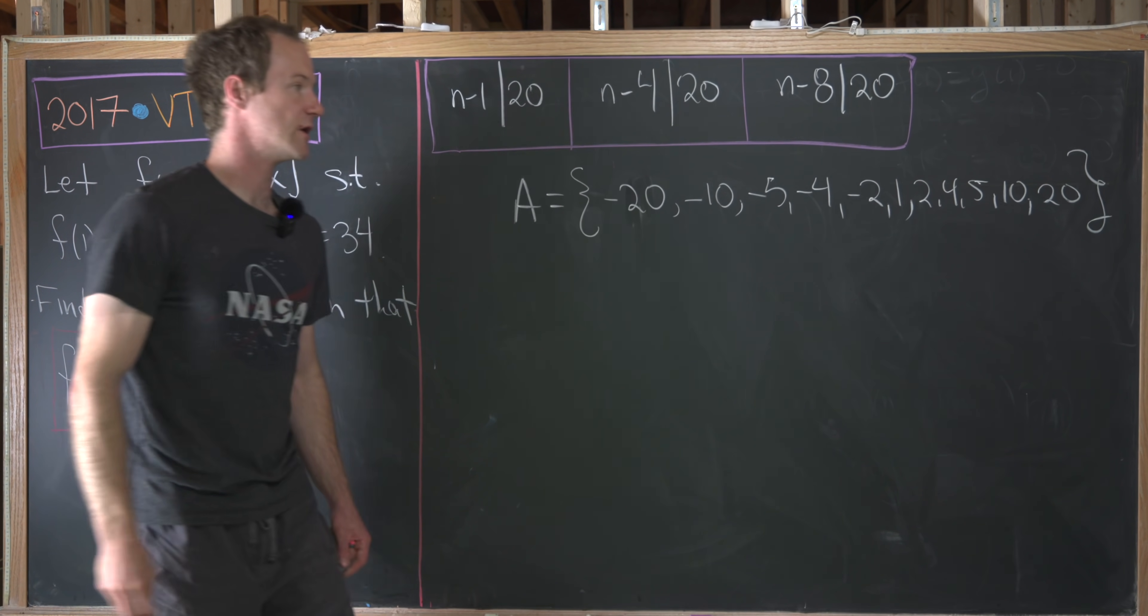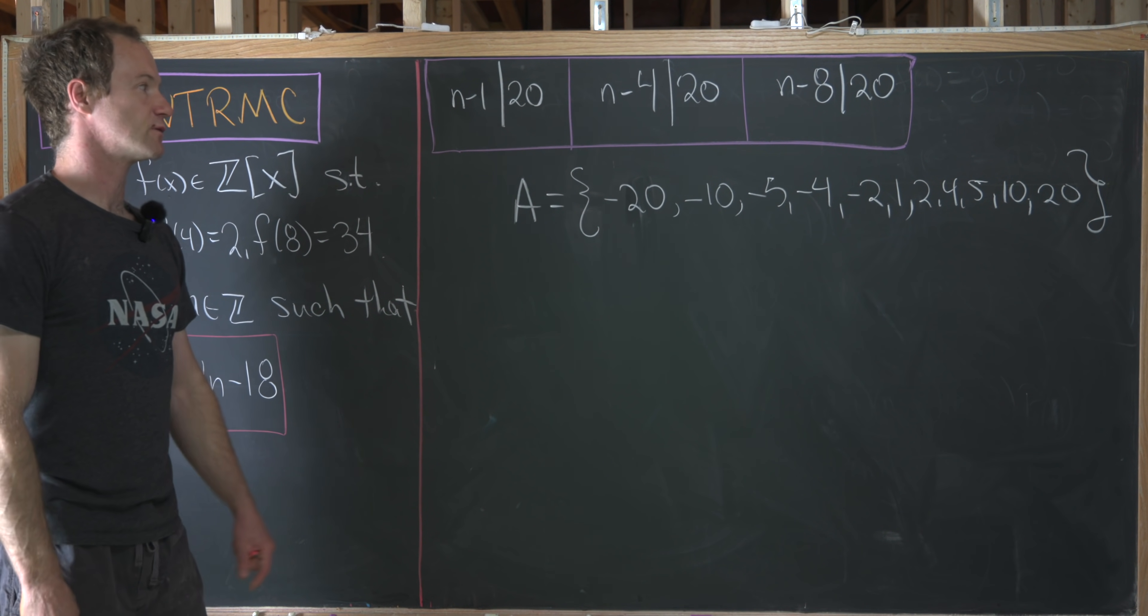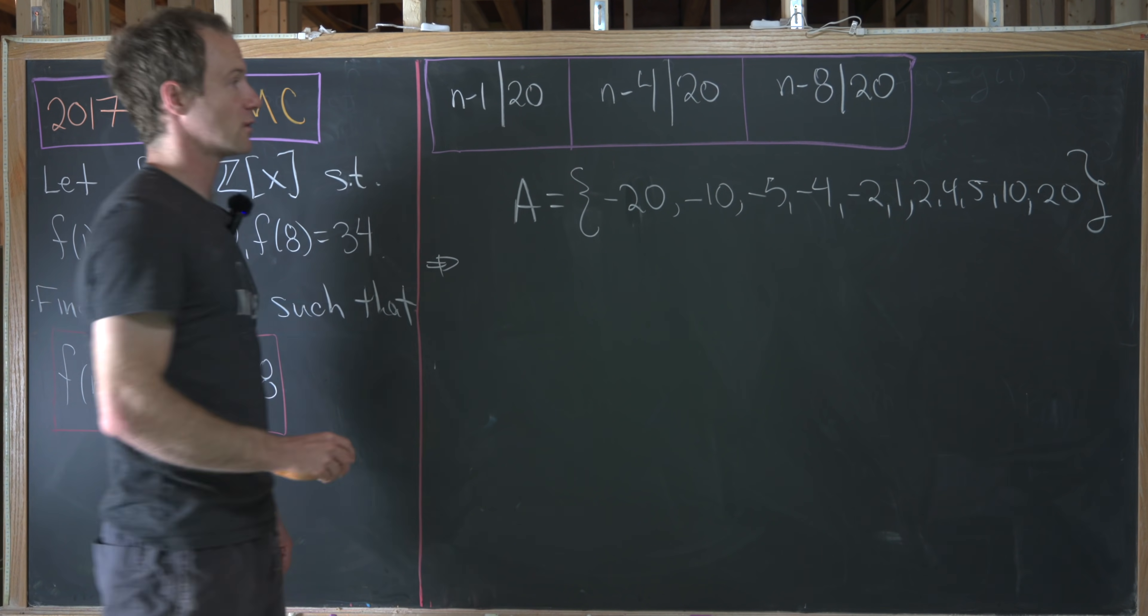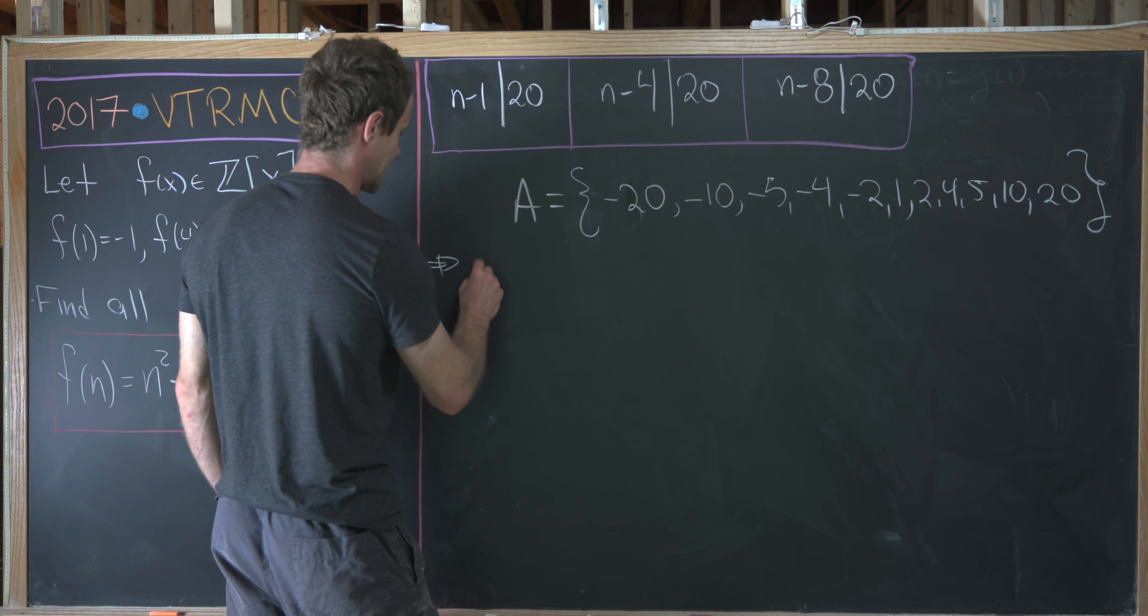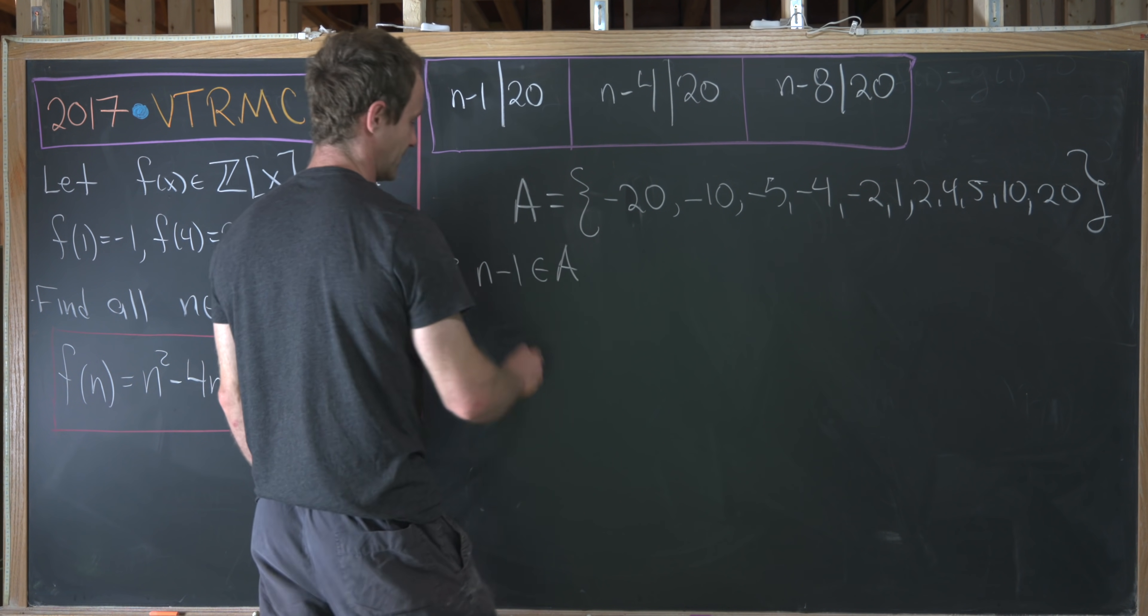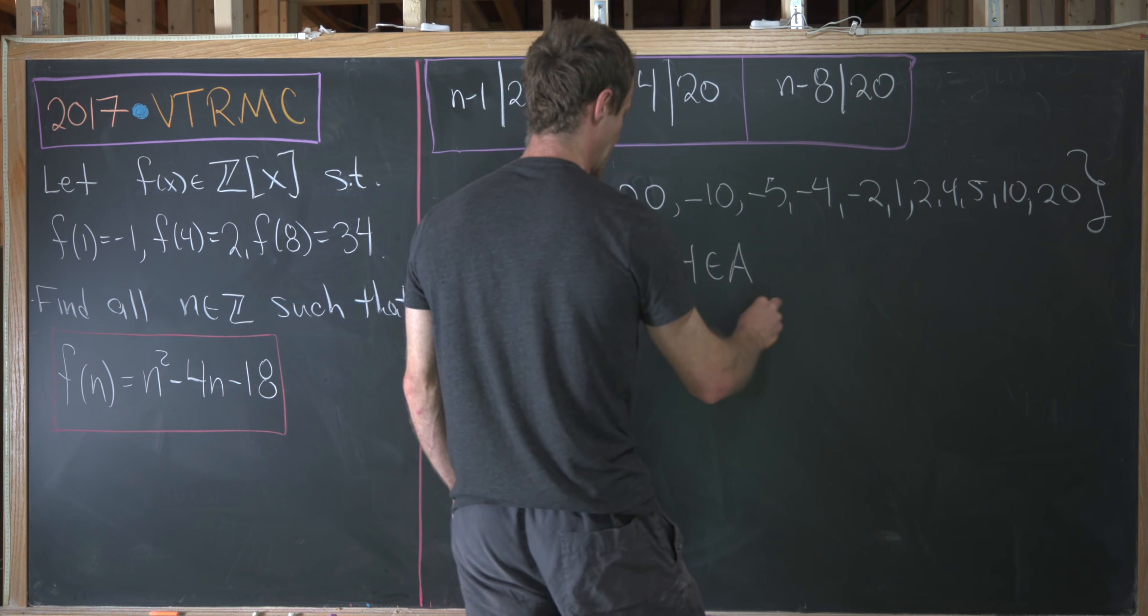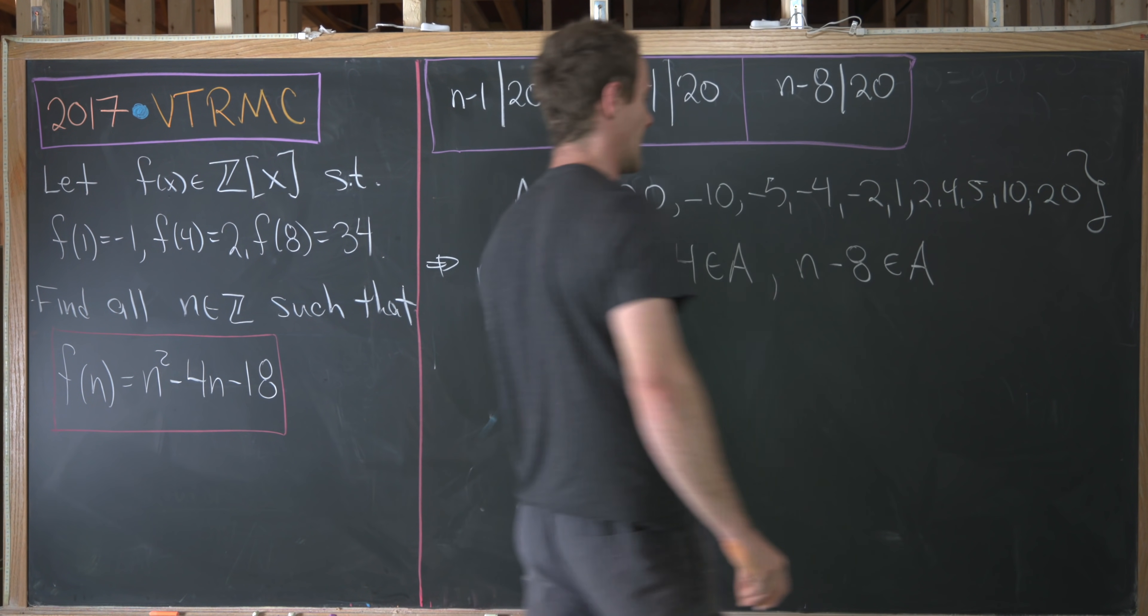So if n minus 1 is one of those, then that means n minus 1 is in A. If n minus 4 is one of those, then n minus 4 is in A, and the same thing for n minus 8. So we have n minus 1 is an element from A, n minus 4 is an element from A, and then n minus 8 is also an element of A.